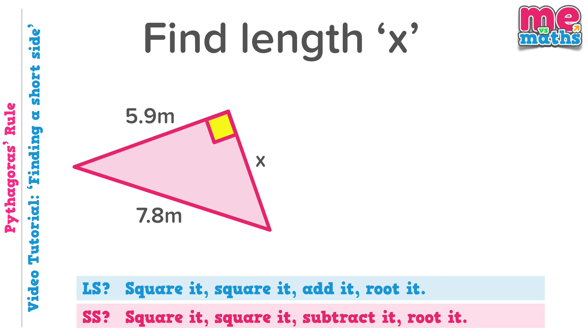So we're given an example here to look at, and we're being asked to find side X. We can see that 7.8 is the hypotenuse, as that is opposite the right angle. So X is one of the shorter sides. Therefore, we know which version of the rule we want to use. Short side, subtract.